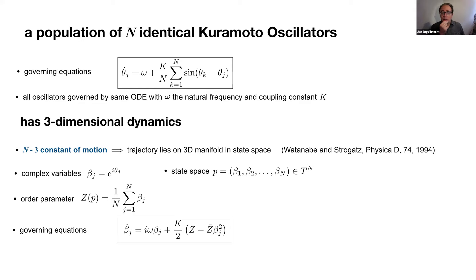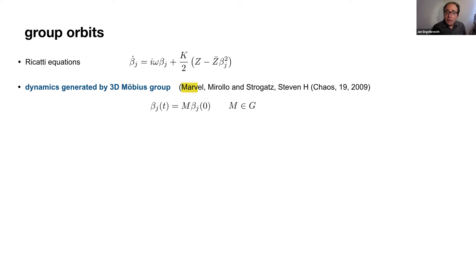Throughout the rest of the talk, I'm going to use complex variables. These betas live on the unit circle, and the governing equations have this generic form, which is a Riccati equation. Marvell, Merlot, and Strogatz realized that this implies there is a Mobius group operator that moves all of the oscillators forward in time. This is a three-dimensional group which explains the three-dimensional manifold.